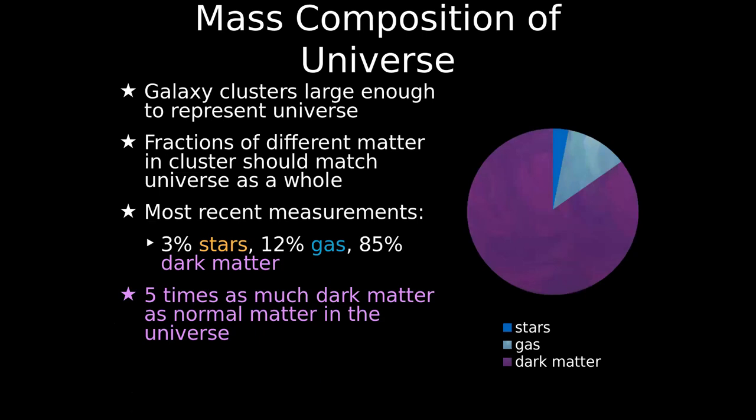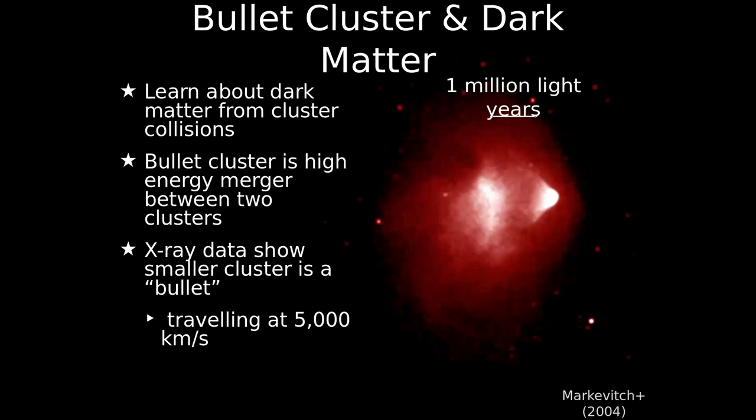Now moving on to the bullet cluster and why it's interesting — it's actually a collision of two galaxy clusters. When two clusters collide, it's interesting because we see what's happening when everything is interacting: galaxies going into galaxies, gas going into gas, and more interestingly, dark matter going into dark matter. We can't do this in a lab — we can't collide dark matter there. So this is an example in the sky where we can see it happening.